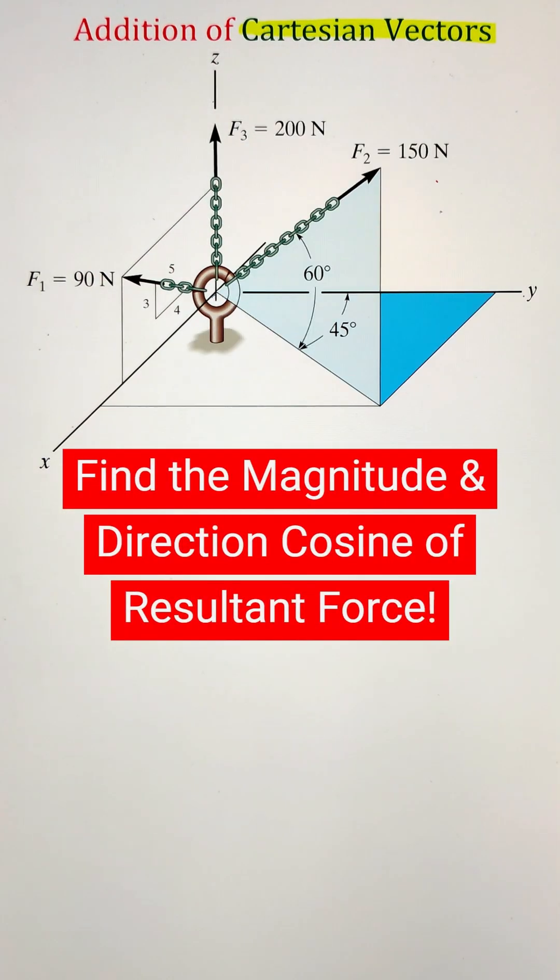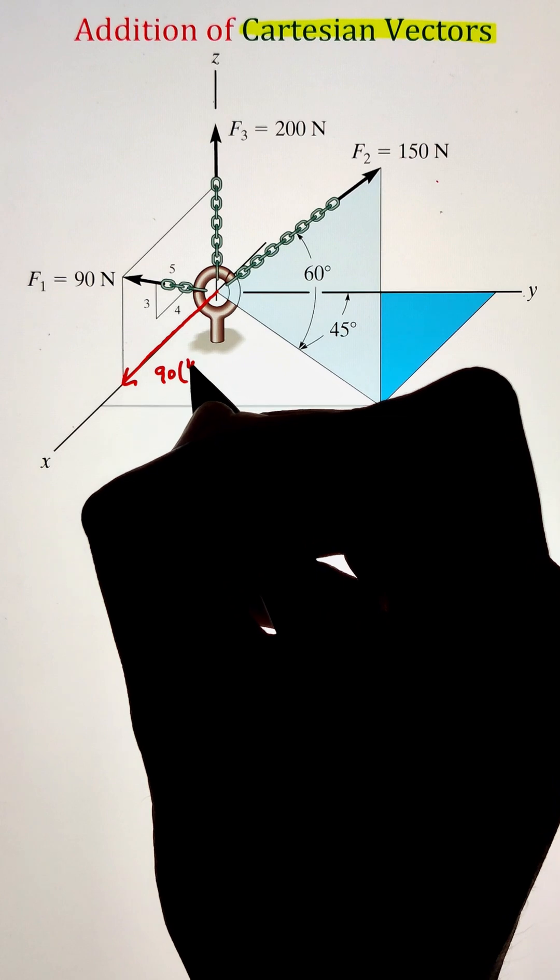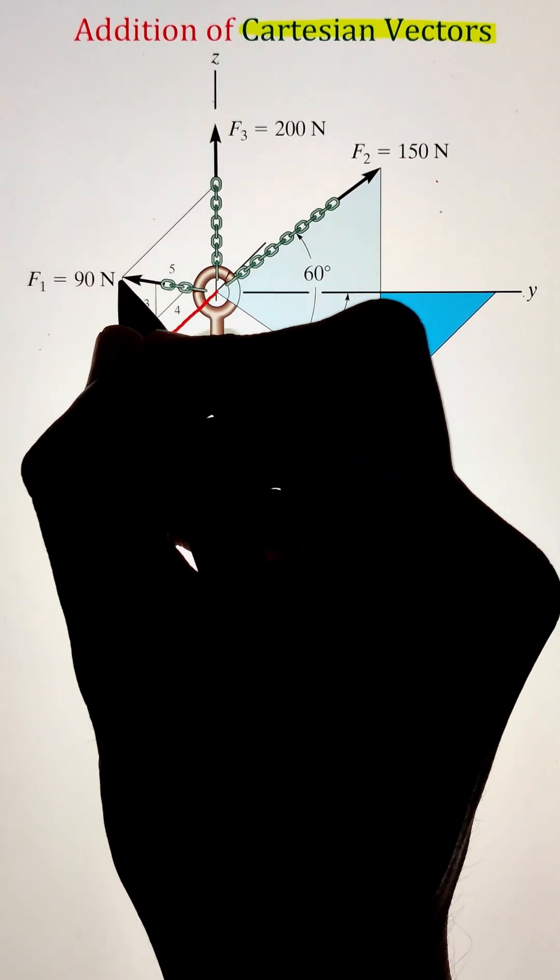In order to find the magnitude and direction cosine of the resultant force, we can first start by converting each one of those forces into its Cartesian coordinates.